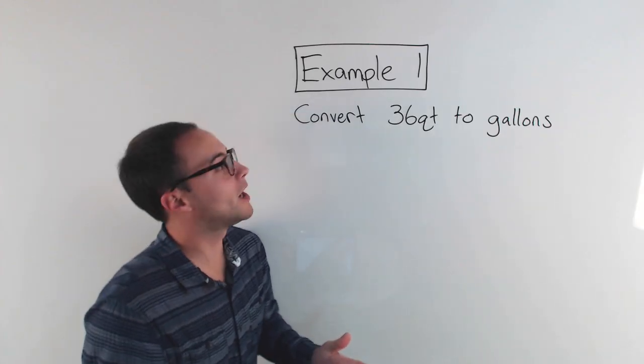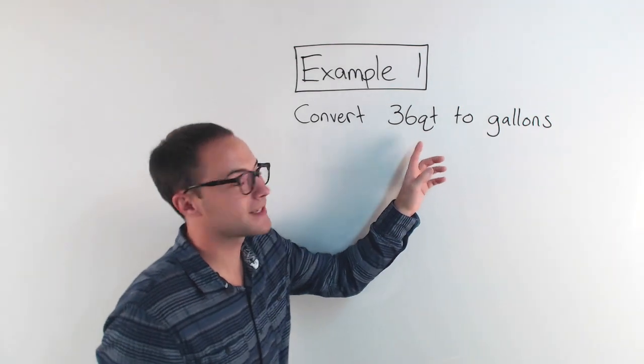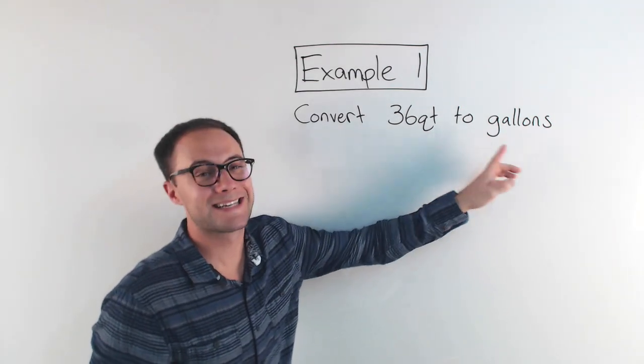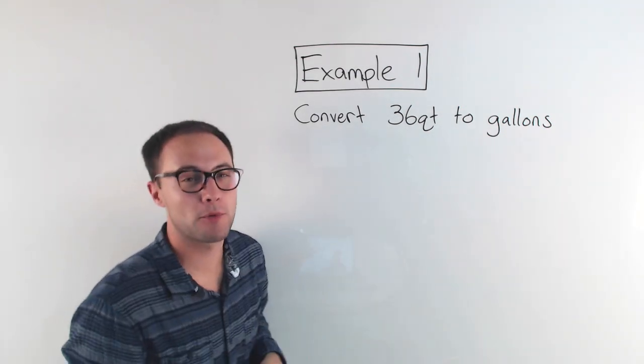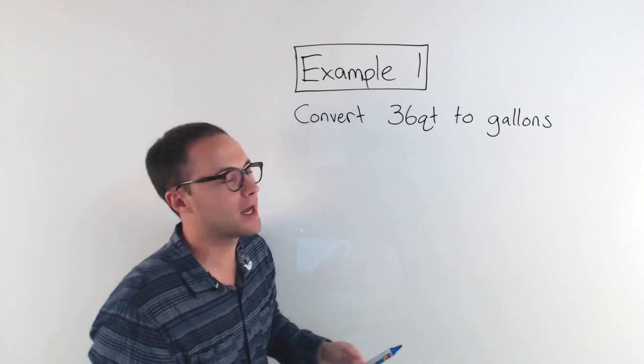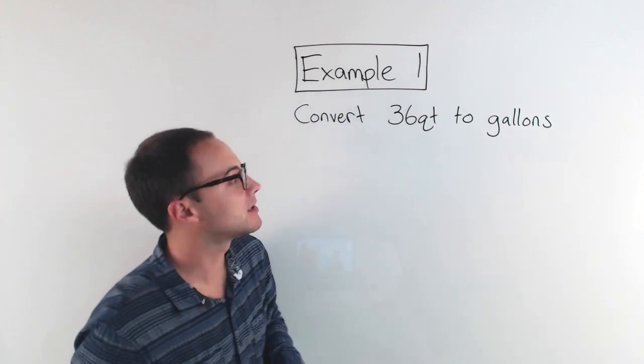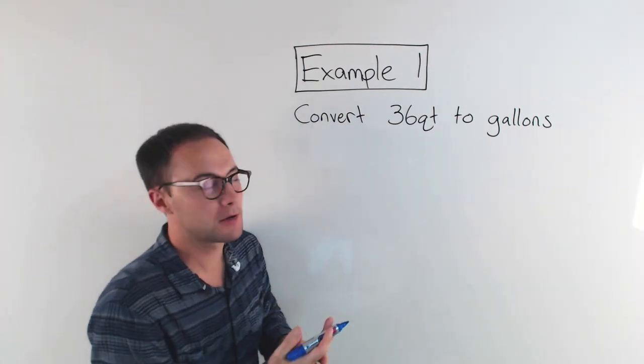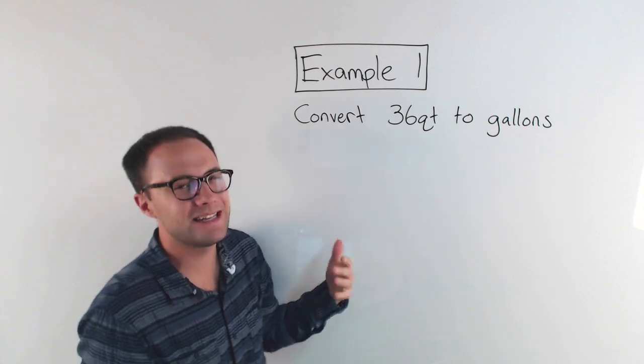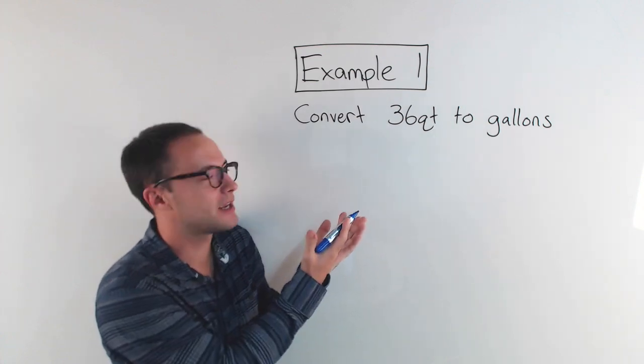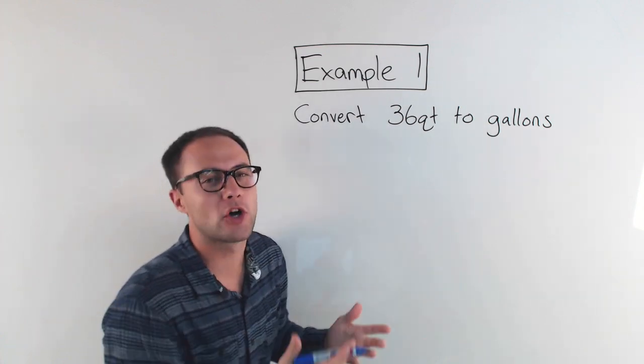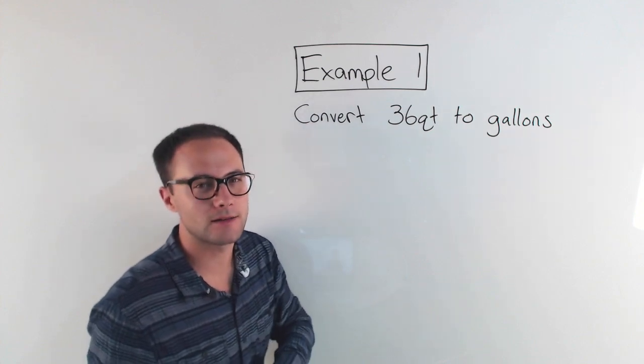All right, here's example number one. Convert 36 quarts, that's what QT stands for, to gallons. Now with this first example, we're not going between the systems quite yet. We're still just in the customary units. But for this problem, if I'm going to convert, I need to know some information that's not here. I need to know how many quarts are in one gallon.